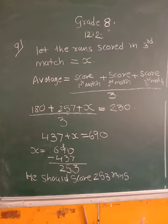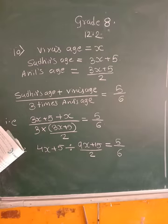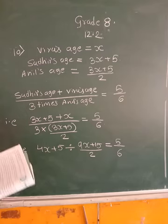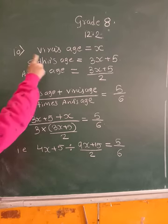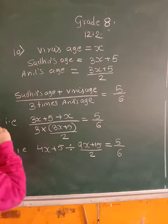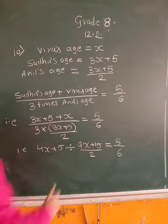Now let's go to the 10th problem. Read very carefully students. Sudhir's present age is 5 more than 3 times the age of Viro. That means Sudhir's age is given in terms of Viro. Therefore let us assume Viro's age as X.